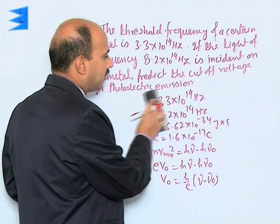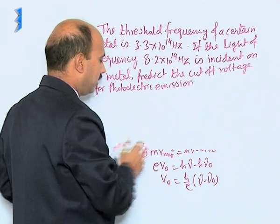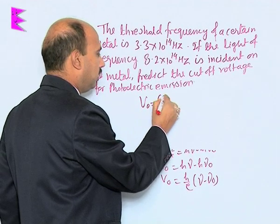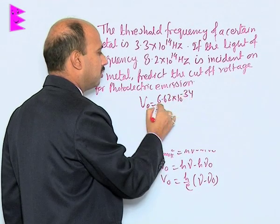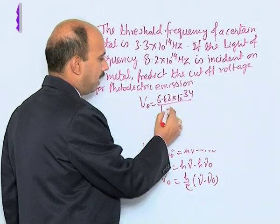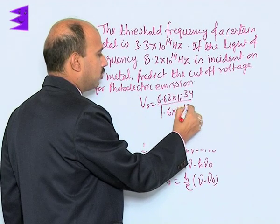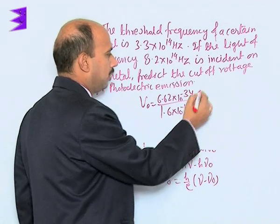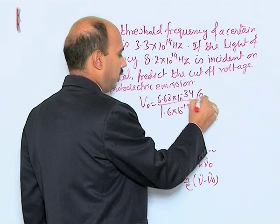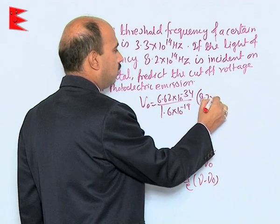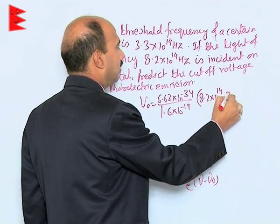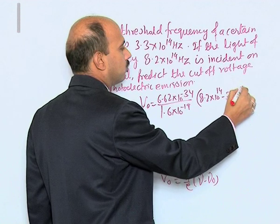When we put all these values, we will be getting V₀ = (6.62×10^-34)/(1.6×10^-19) × (8.2×10^14 - 3.3×10^14).